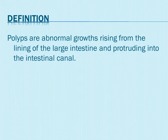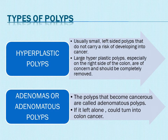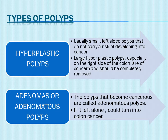So the types of polyps: there are two types — hyperplastic polyps and adenomas, or adenomatous polyps. Hyperplastic polyps occur on the left side of the colon. These are considered to be very dangerous and should be completely removed.